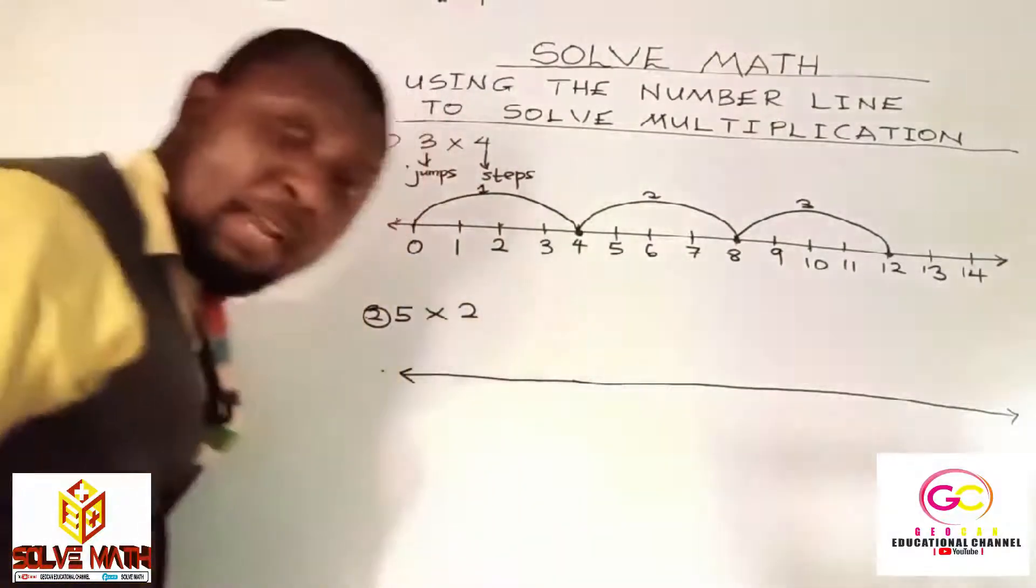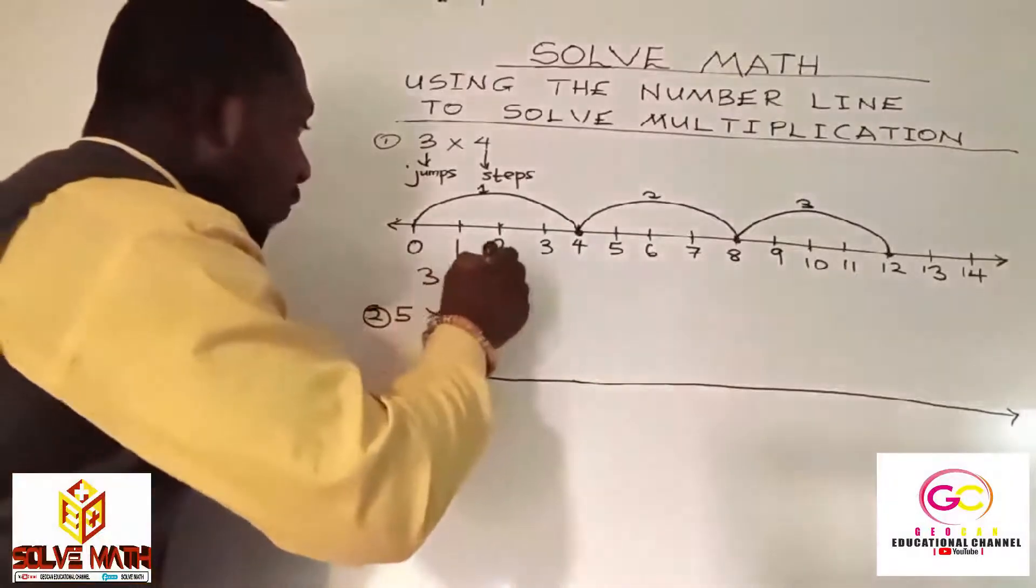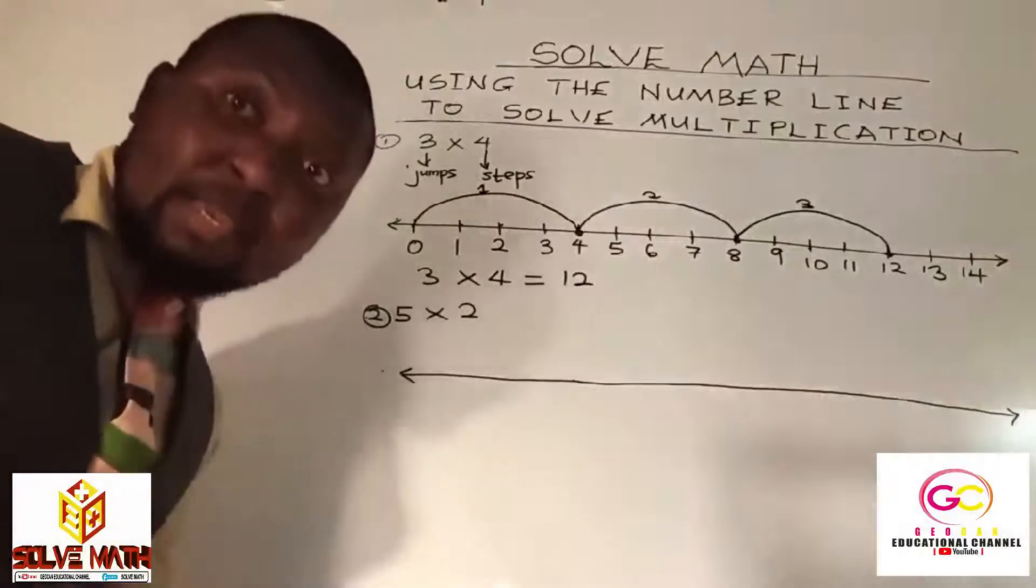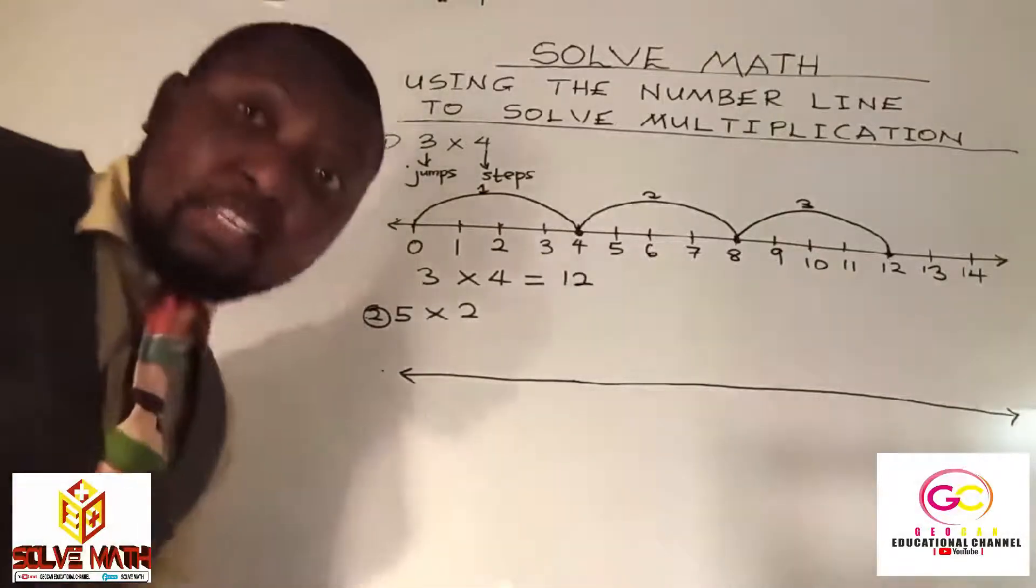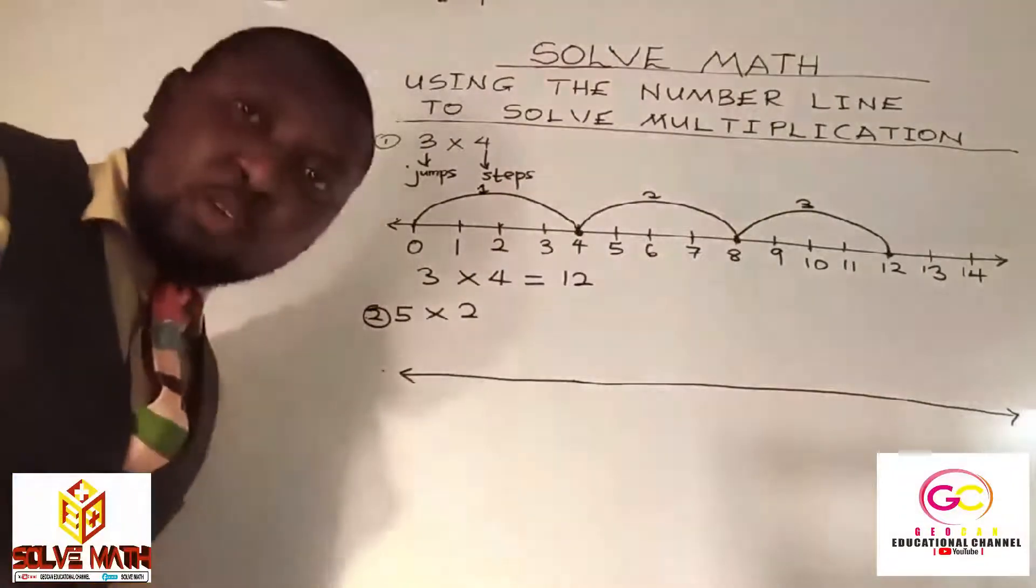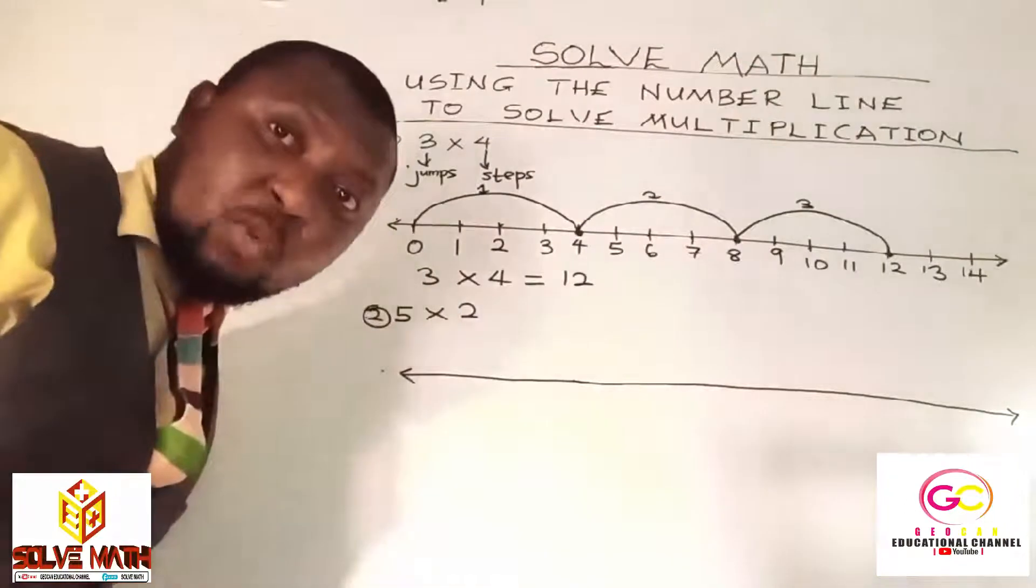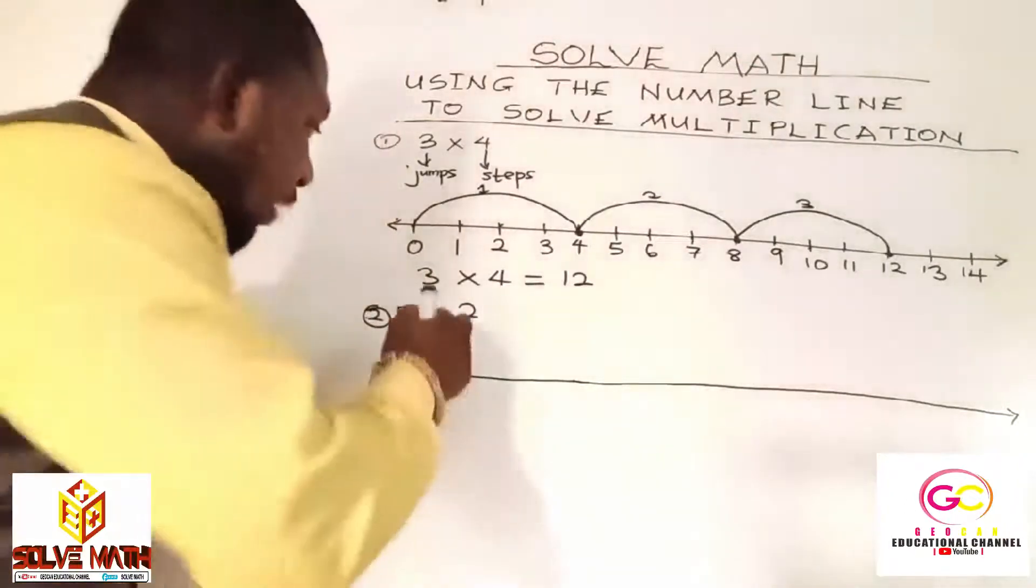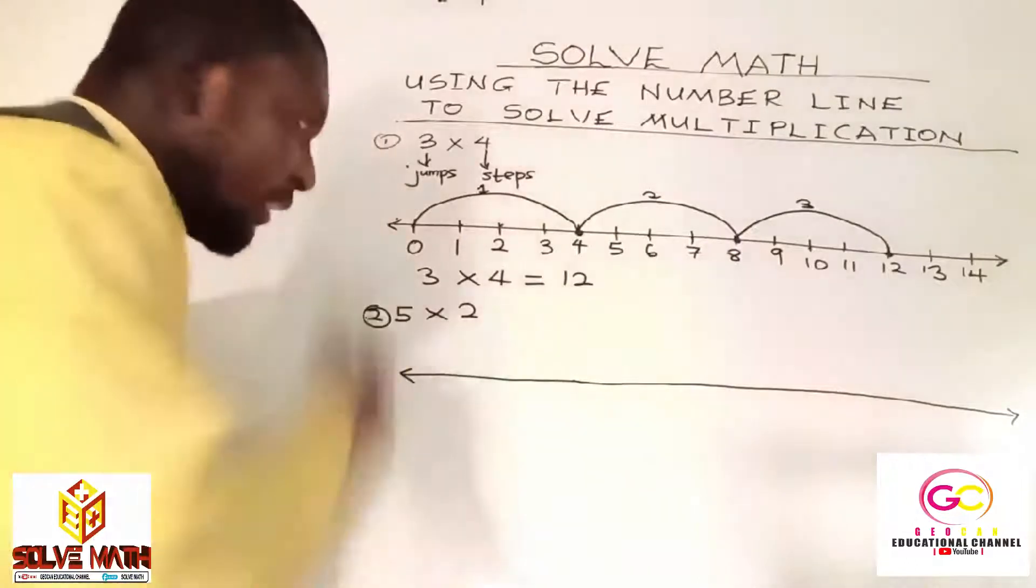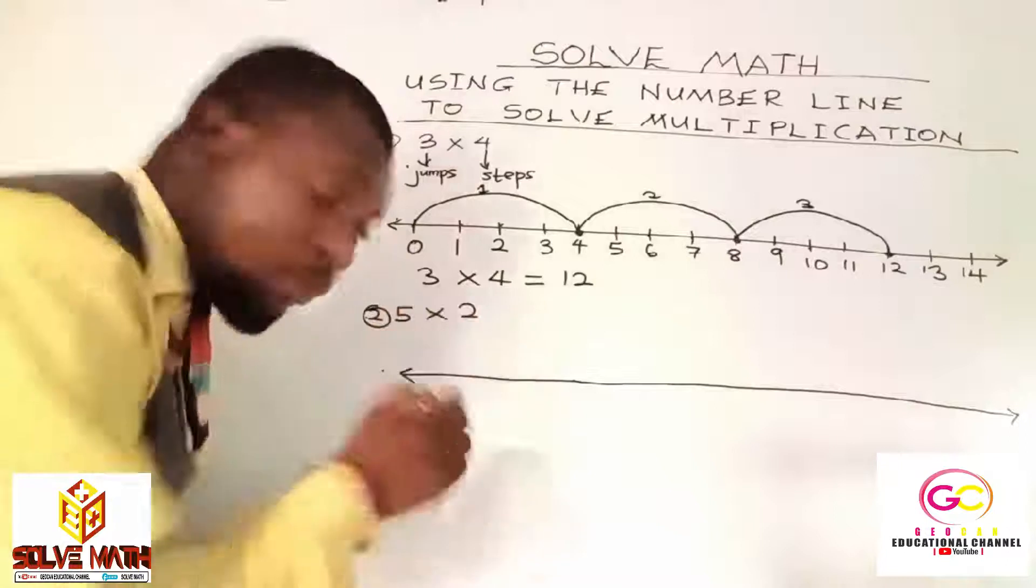What it simply means is that three times four will give you twelve. Easy as ABC. We've used the number line in solving it. Let's move on to question two. Follow the same rules. The first factor is for the number of jumps. And our second factor is for the number of steps. But let's look. Label our line. So, start from zero.